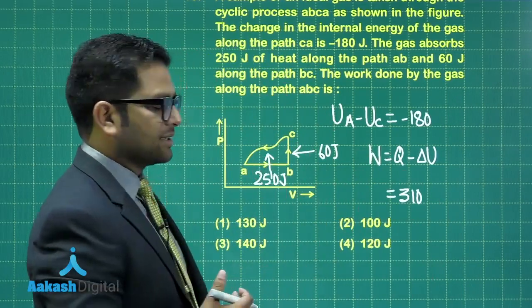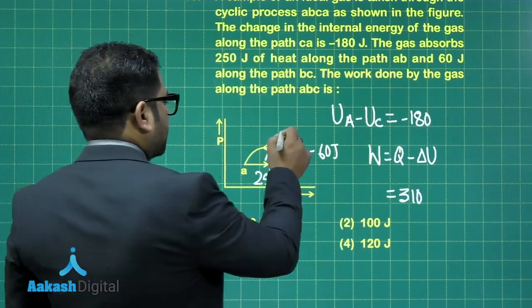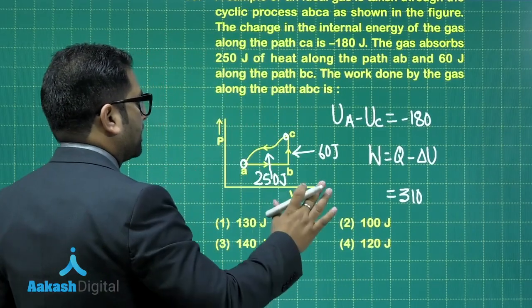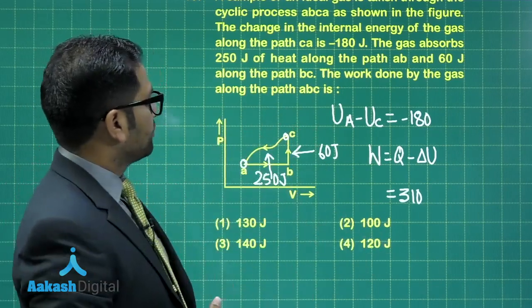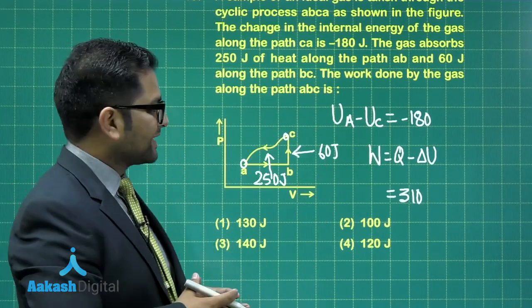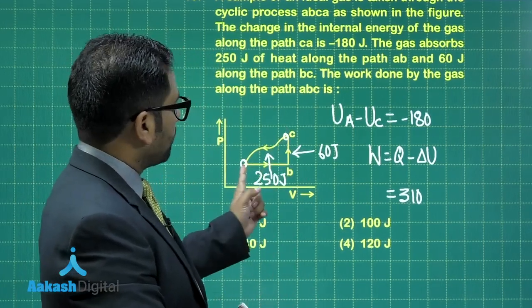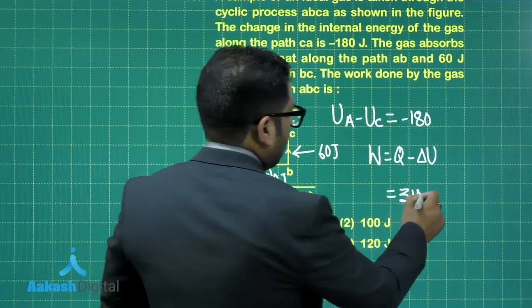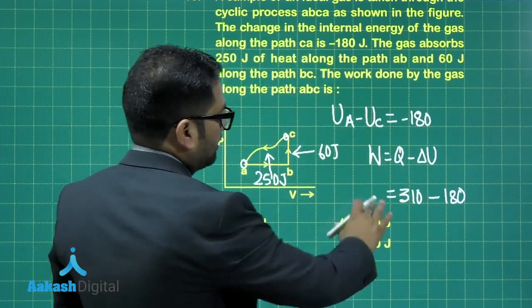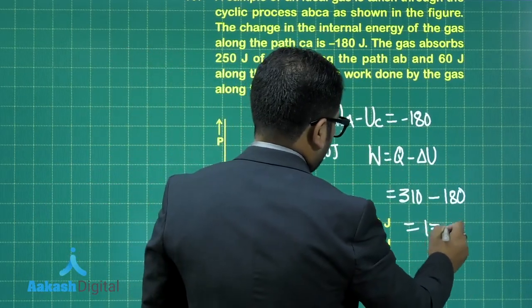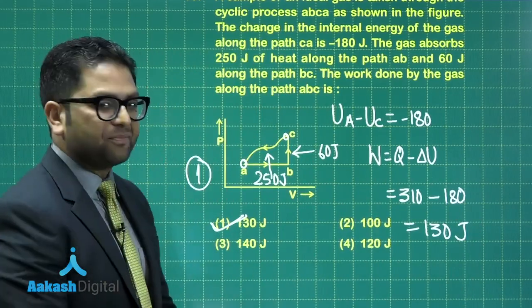What about internal energy change? This depends on the point, it doesn't depend on the path. The difference in internal energy between C and A would be same for both paths, the upper one and the lower one. The change in internal energy from the first data can be used in the second instance as well. When I talk about the final, UC minus UA - and if this is minus 180, UC minus UA has to be plus 180, eventually resulting in 130 joule. I have it in option number one.